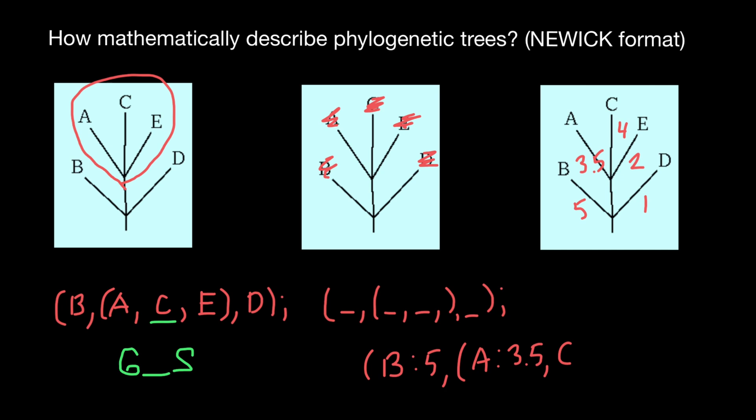Then C, colon, 4, comma, then E, colon, 2, and we close parentheses.